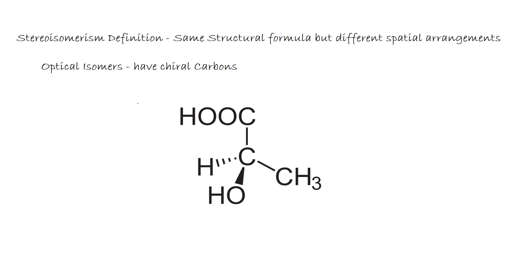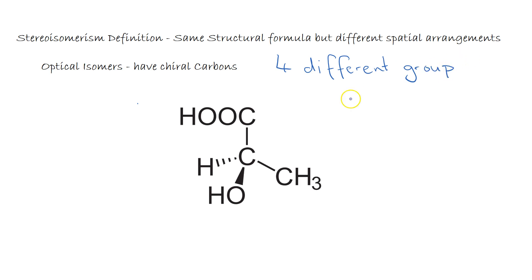All of our Optical Isomers we'll be looking at have one thing in common — they have a chiral carbon. What is a chiral carbon? A chiral carbon is one that has four different groups attached to it. Now be careful here: they are different groups, but they don't have to be different functional groups, as is often confused — just four different groups attached.